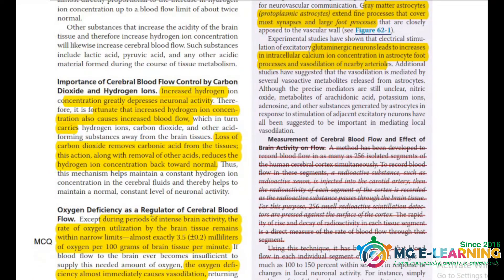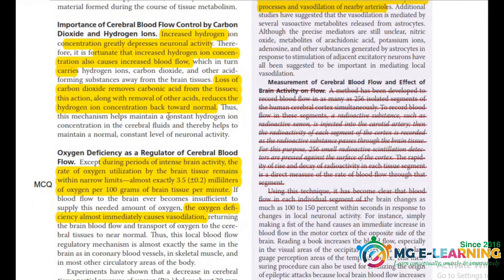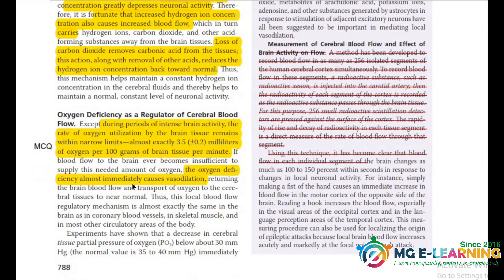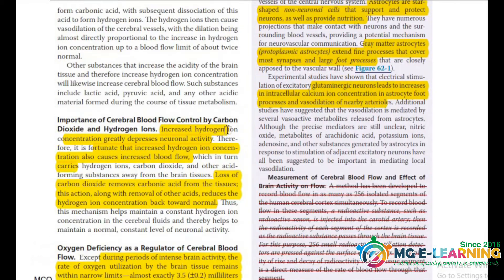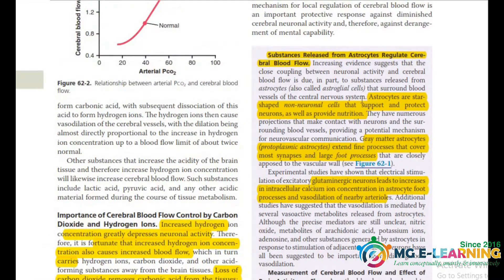Now is the importance of carbon dioxide and hydrogen ion — this is also part of your SCQ. You have to write this in the regulation of Cerebral Blood Flow, along with the role of oxygen. These are all important for your MCQs, and the figures are very important. The fourth contributing factor is the substance from astrocytes, also important as MCQ points.